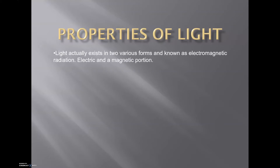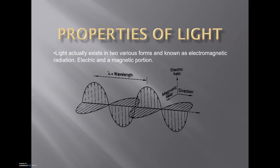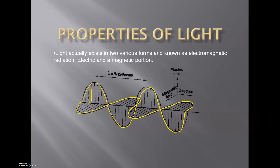Let's talk about properties of light and what it contains. Light exists in two different forms: the electric and the magnetic portion. Light propagates as waves through space. The electric portion goes up and down like a sine wave, and the magnetic portion oscillates in the same manner — as one goes up the other goes out, one goes down the other goes the other direction. This pattern repeats itself continuously throughout time.